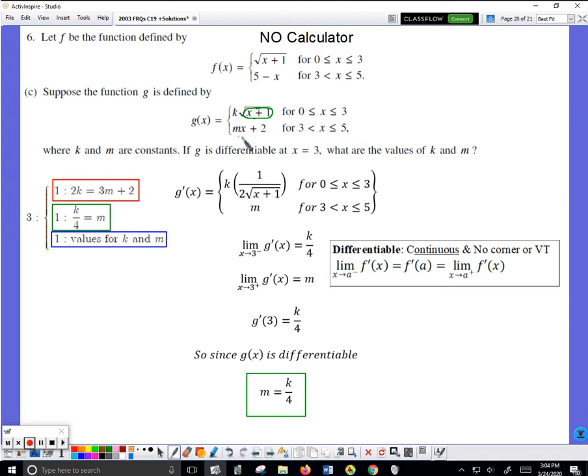I need the derivative of this. M times x, that's a constant times x, the derivative will just be m. Plus the derivative of 2 is zero. So now I have this, so I use the definition now.